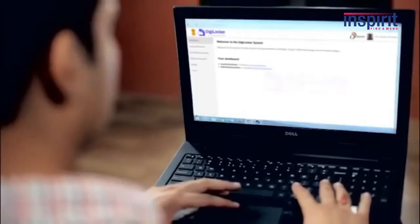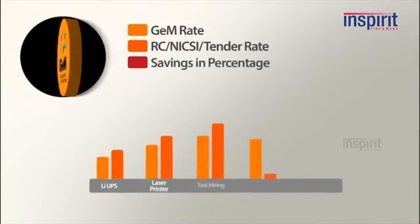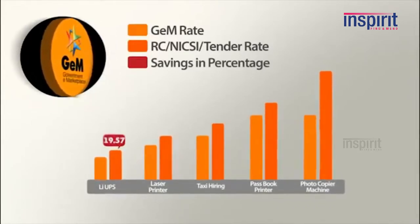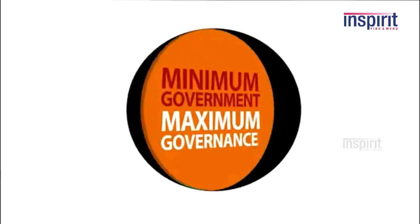The government is purchasing things at a price which is less than the benchmark price of 50 lakhs, and along with that, without giving any room for corruption, the purchase is completed. All these activities are facilitated by the Government E-Marketplace. It is a path-breaking step by the Government of India towards achieving fair procurement, transparent procurement, and saving public money.